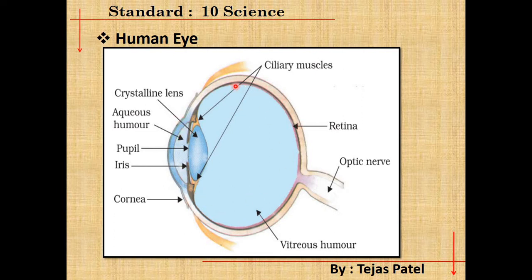Now we are going to understand the function of each and every part of the human eye — the cornea, iris, pupil, aqueous humour, crystalline lens, retina, ciliary muscles, and optic nerve. These are the major parts of the human eye.